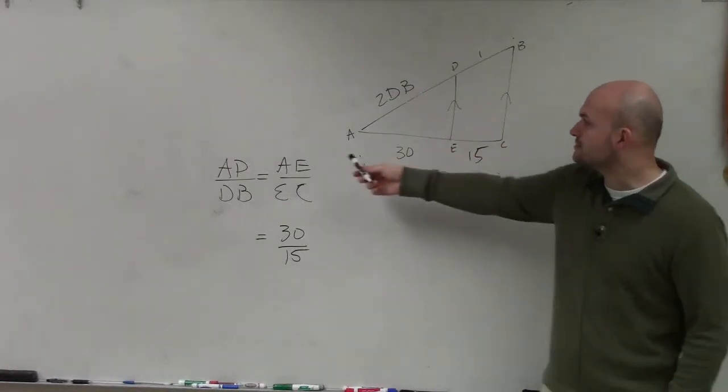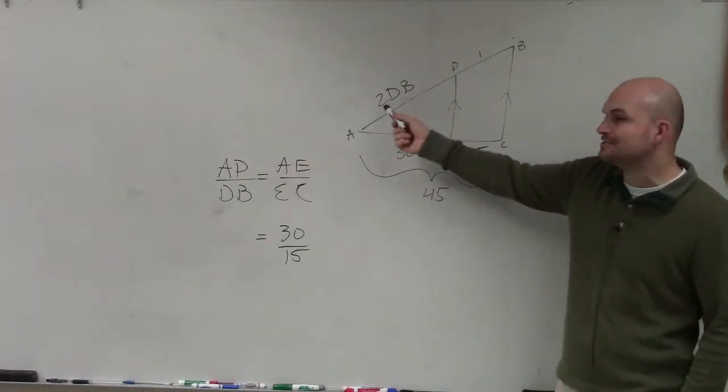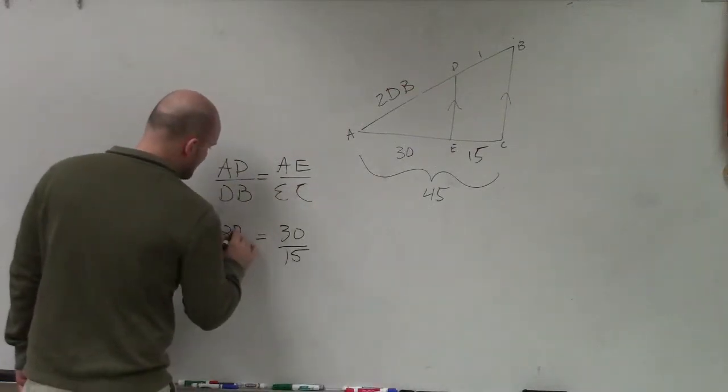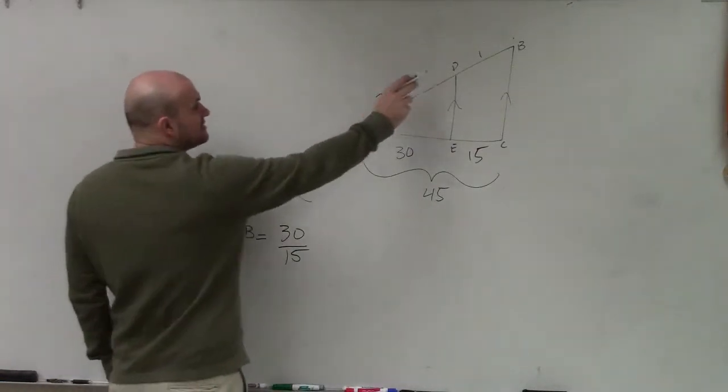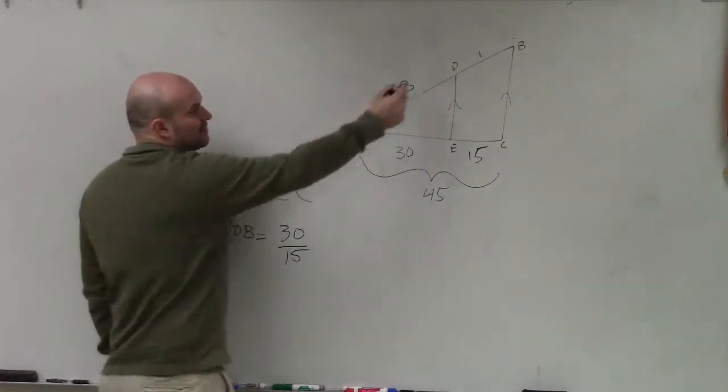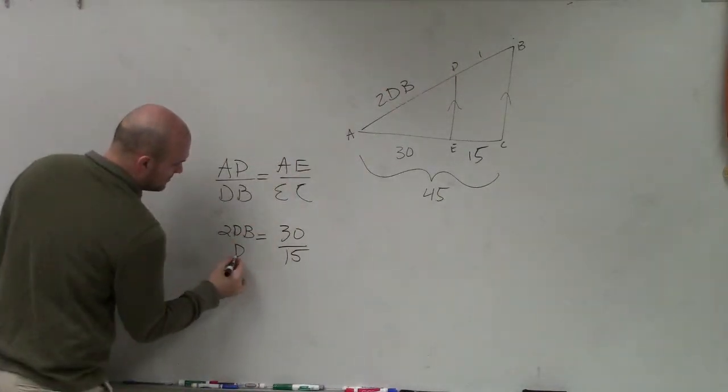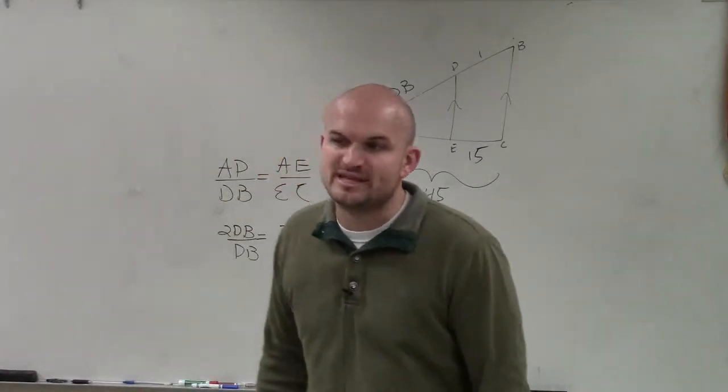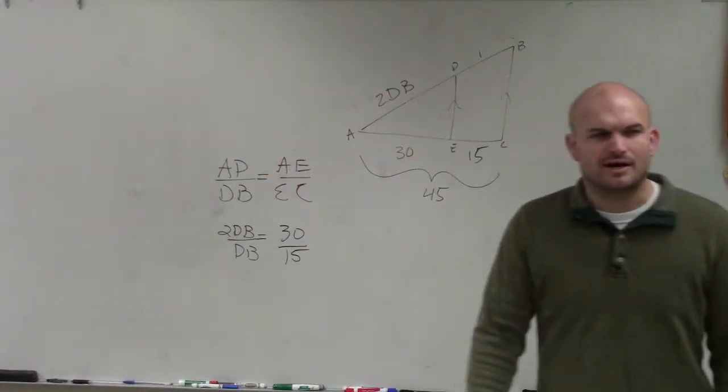Now the next one is do we know what AD is? AD says 2 DB, okay? So I write 2 DB. And here, the length of DB, well, that's just going to be DB. What's 2 DB? Twice the length of DB, 2 DB, twice the length of it, all right?